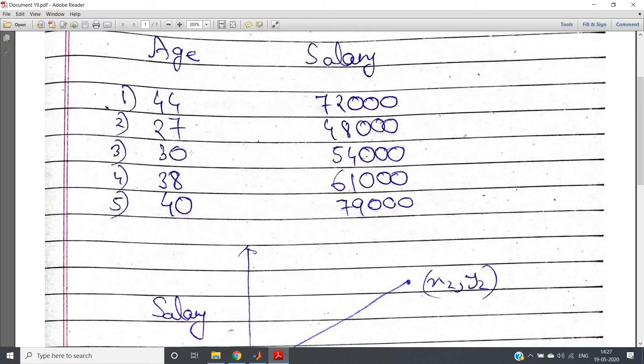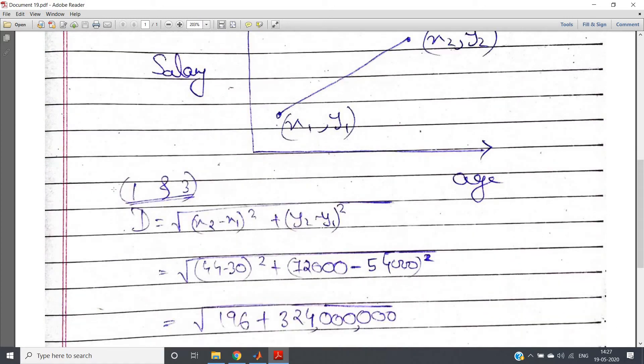For example, suppose I want to calculate the Euclidean distance between data 1 and data 3. What is data 1? 44, 72,000. Data 3 is 30 and 54,000. So what is the Euclidean distance? Root over (44 minus 30) whole square plus (72,000 minus 54,000) whole square.